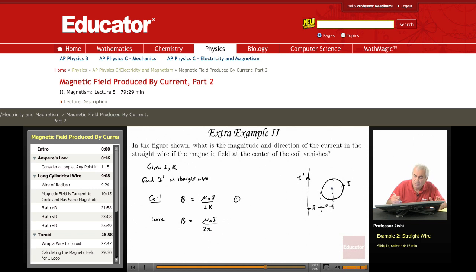The distance from the point to the wire is 2R. So 2 pi times 2R. And it's into the page.